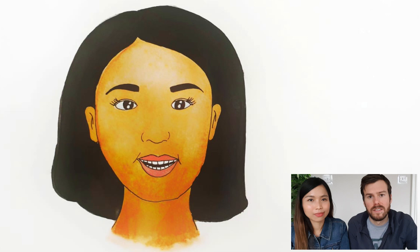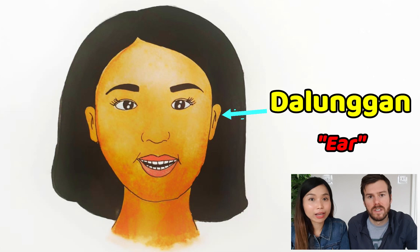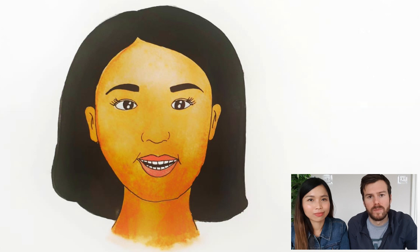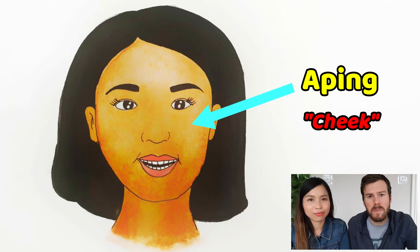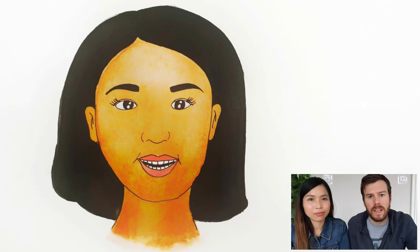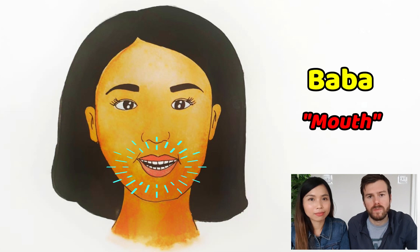Ear — dalungan. Ear is dalungan. Next we have cheek — upping. Cheek is upping. Next we have mouth — ba-ba. Mouth is ba-ba.